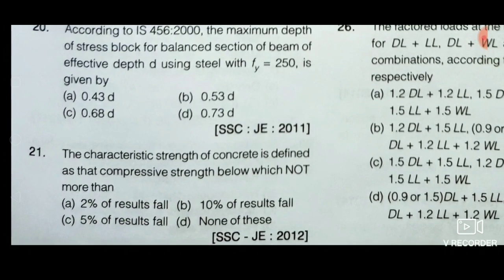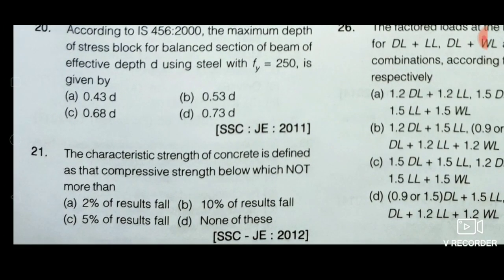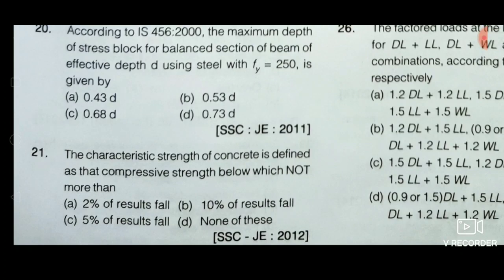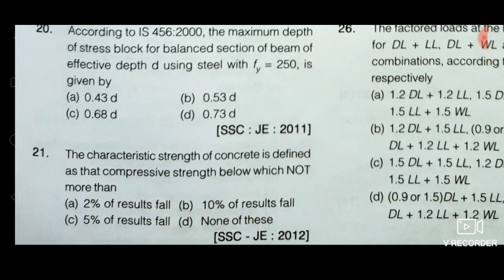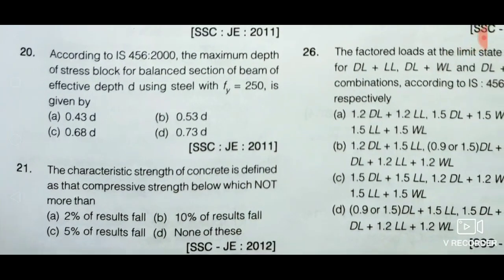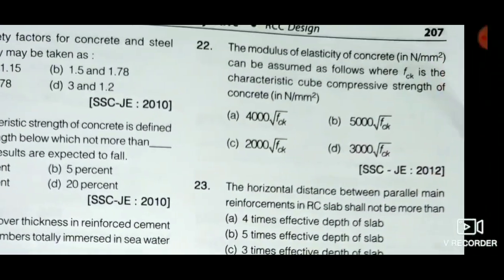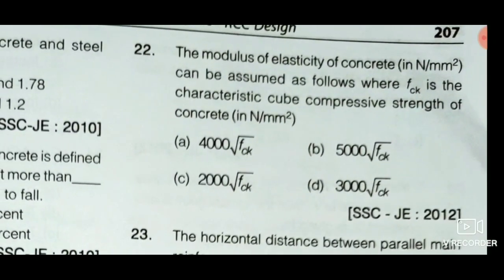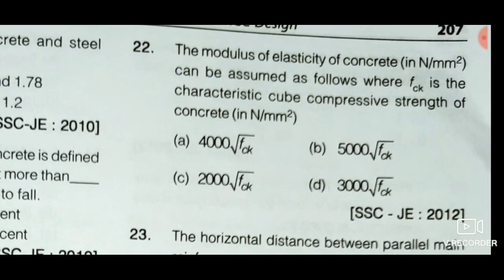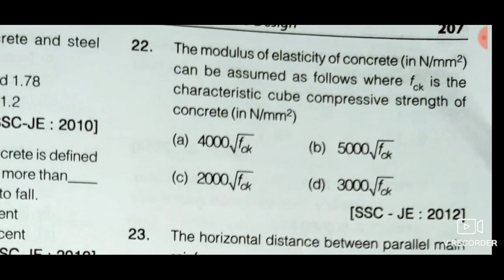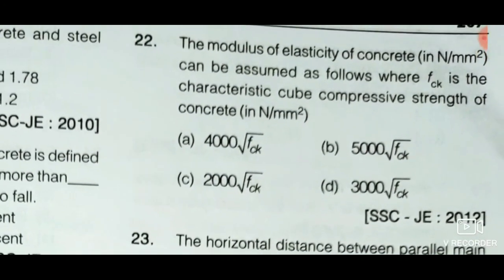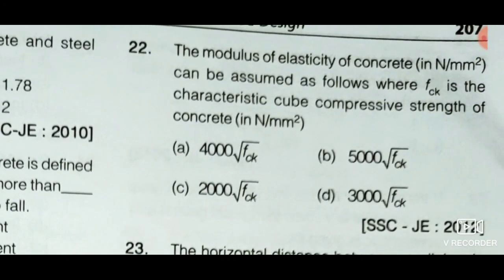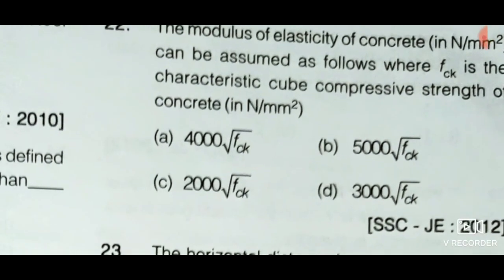Next question: The characteristic strength of concrete is defined as that compressive strength below which not more than — option A: 2% of results fall, option B: 10% of results fall, option C: 5% of results fall, option D: none of these. Option C is the correct answer: 5% of results fall. Next question: The modulus of elasticity of concrete in N/mm² can be assumed as — option B is the correct answer: modulus of elasticity = 5000 × √fck, where fck is the characteristic cube compressive strength in N/mm².